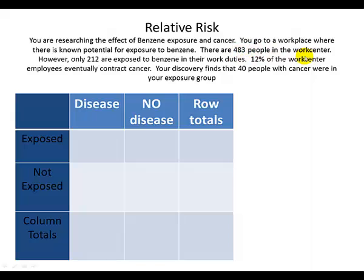There are 483 people in the work center; however, only 212 are exposed to benzene in their work duties. You also know that 12% of the work center employees eventually contract cancer — that's a high number, but it's used here for purposes of analysis. Your discovery finds that 40 people with cancer were in the exposure group.